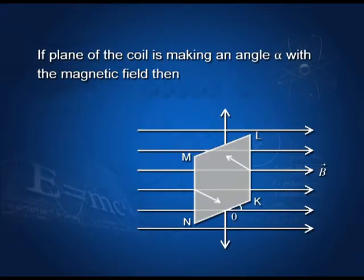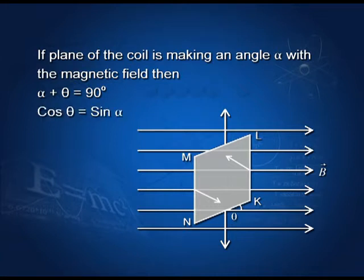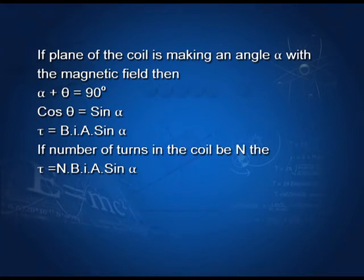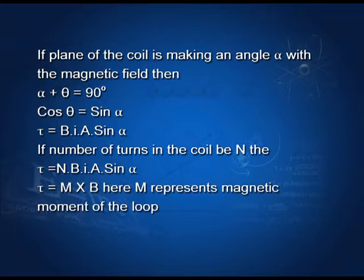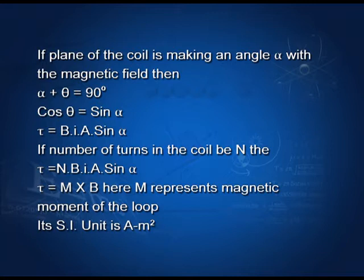If the plane of the coil makes an angle alpha with the magnetic field, then alpha plus theta equals 90 degrees, so cosθ equals cos(90° − α) which equals sin α. Substituting this, we get τ equals BIA sin α. If the number of turns in the coil is N, then the total torque τ equals NBIA sin α. In vector form, τ equals M cross B, where M represents the magnetic moment of the loop and its SI unit is ampere metre squared.